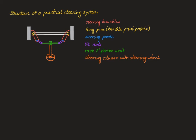As for the other parts of the steering system, the purple parts are called the left and the right tie rod. In green we see the rack and pinion unit. And in orange we see the steering column with the steering wheel.